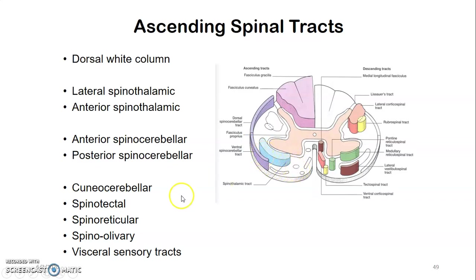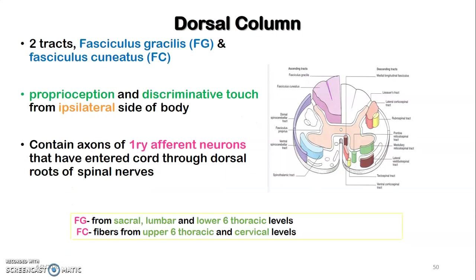Other ascending tracts include the cuneocerebellar, spinotectal, spinoreticular, spinoolivary, and visceral sensory tracts, named according to where they come from and where they terminate. In the next lecture, we will discuss each of these ascending tracts in detail. Thank you very much.